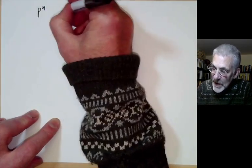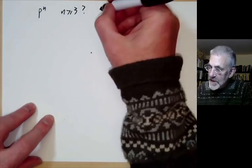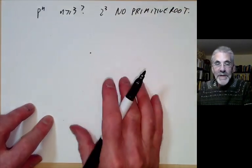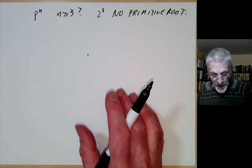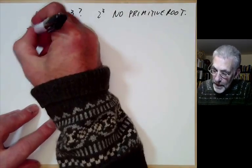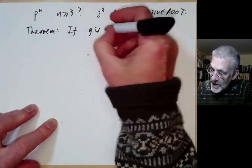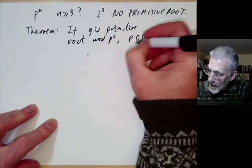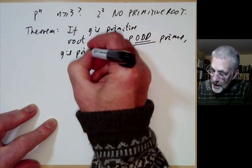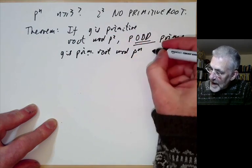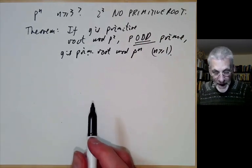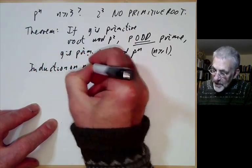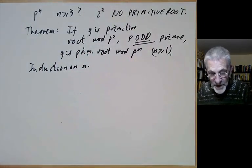Now what about p to the n for n greater than or equal to 3? This gets a little tricky because 2 cubed has no primitive root, so we need to explain why the prime 2 behaves differently from all odd primes. The theorem is: if g is a primitive root mod p squared and p is an odd prime, then g is a primitive root mod p to the n for any n greater than or equal to 1. The idea is to use induction on n.